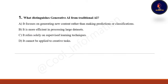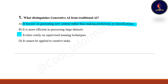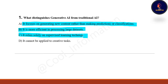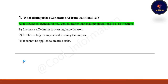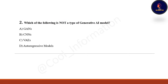First question: What distinguishes generative AI from traditional AI? Option A: it focuses on generating new content rather than making predictions or classifications. Option B: it is more efficient in processing large databases. Option C: it relies solely on supervised learning techniques. Option D: it cannot be applied to creative tasks. Correct option is A — it focuses on generating new content rather than making predictions or classifications.